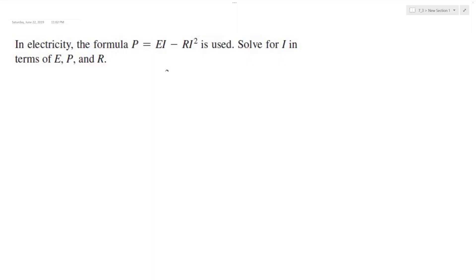So we've got electricity here. We've got a formula P is equal to EI minus RI squared. Solve for I in terms of E, P, and R.